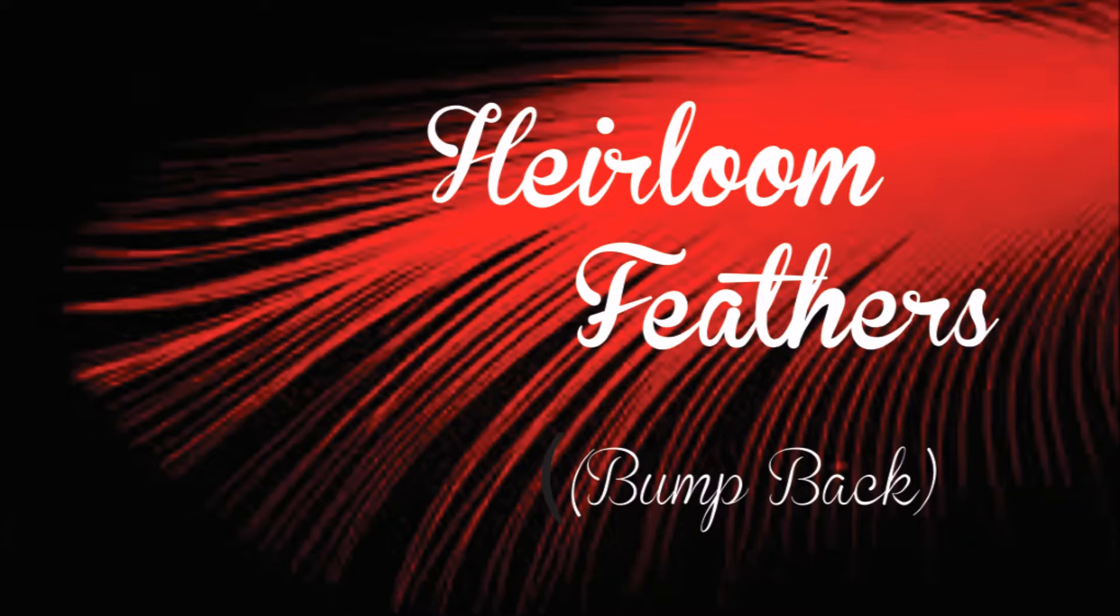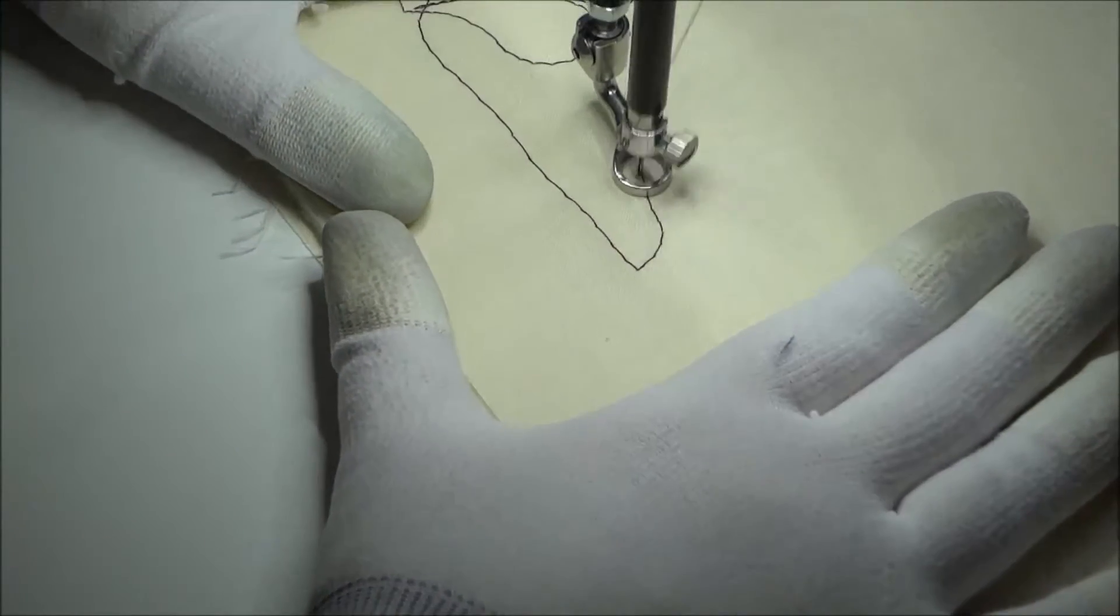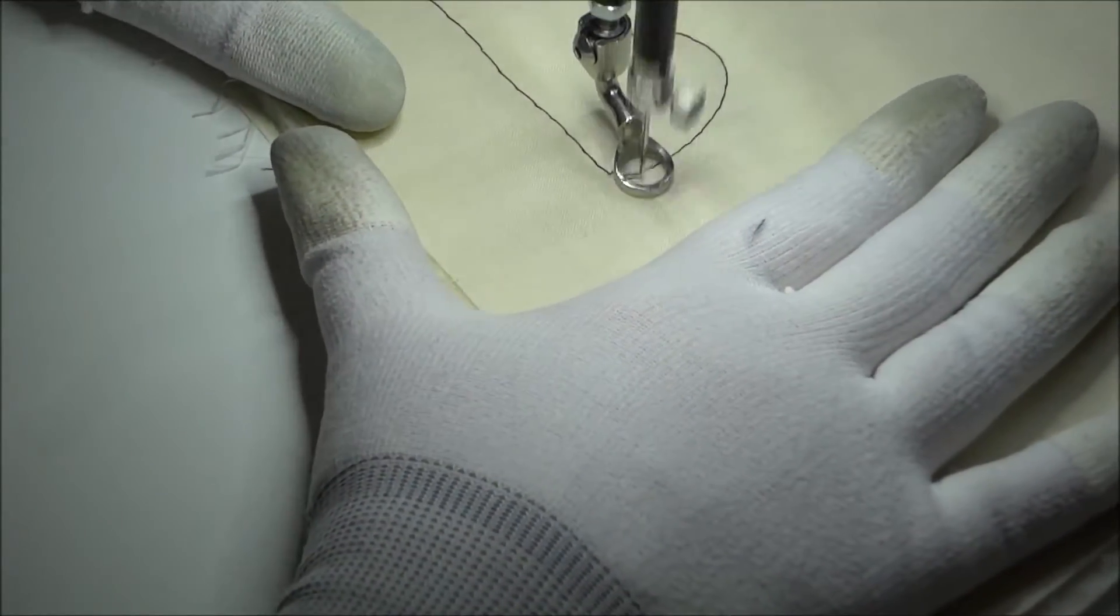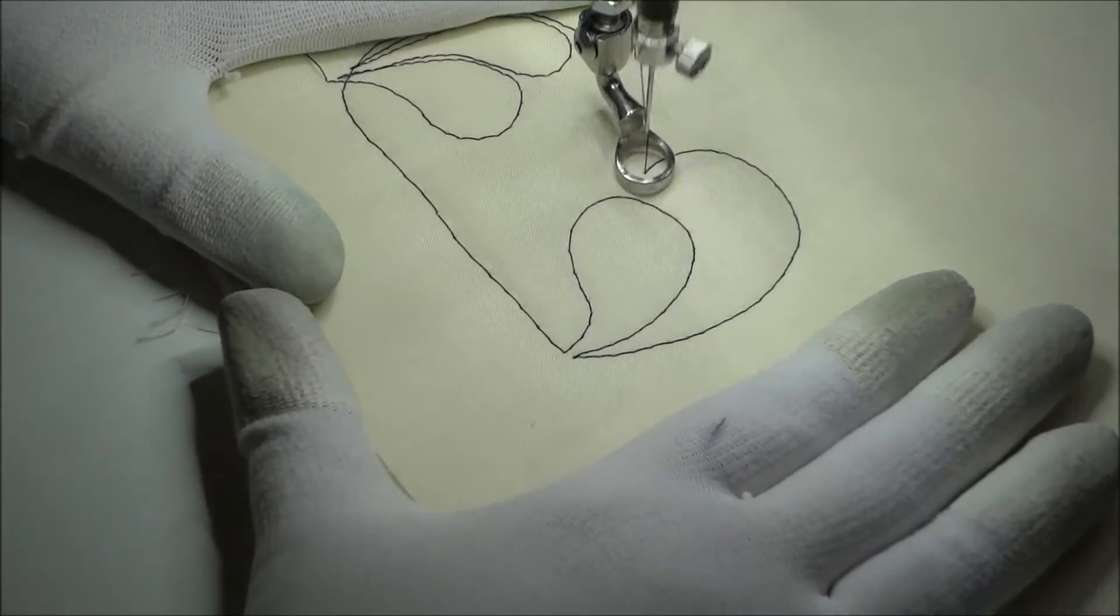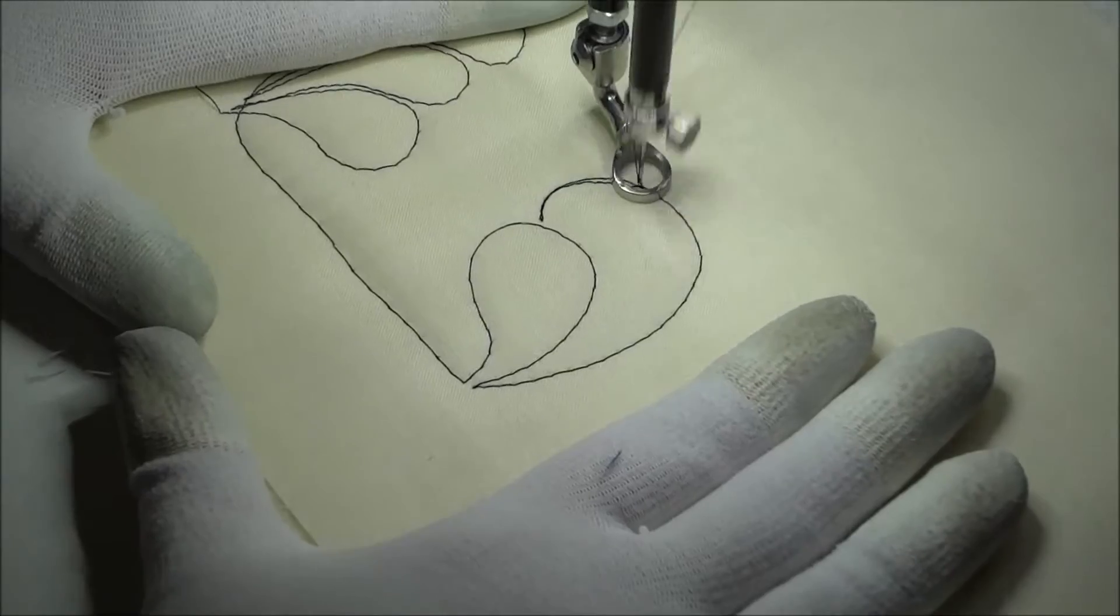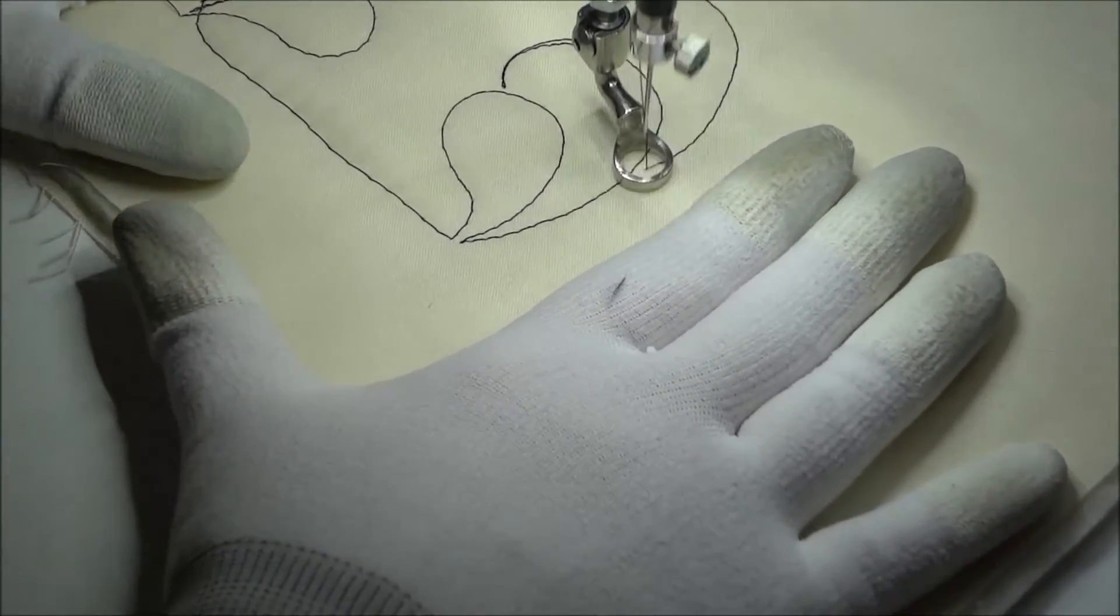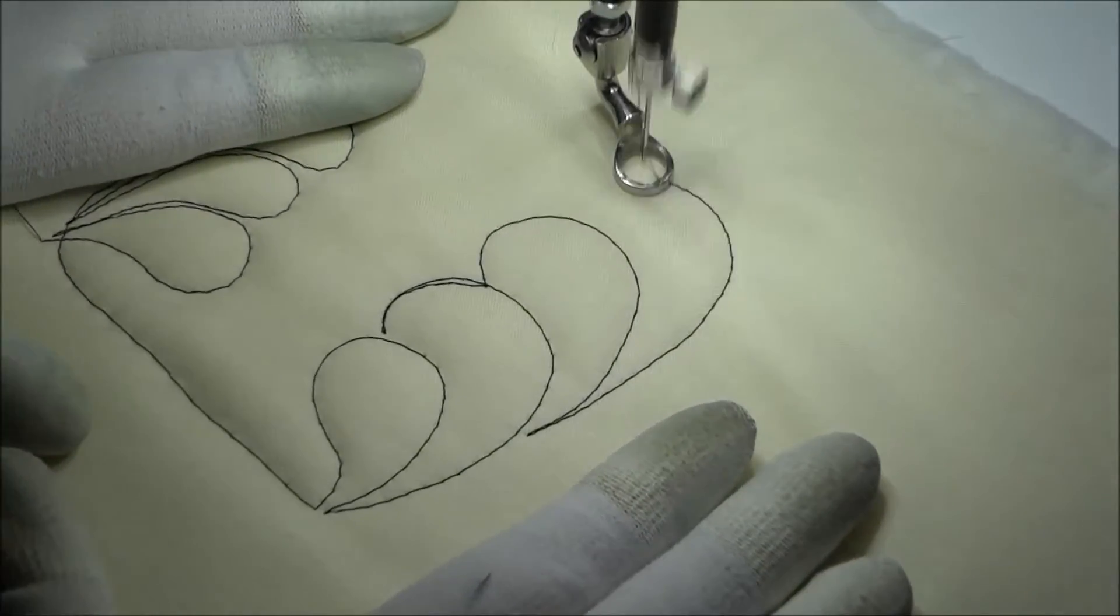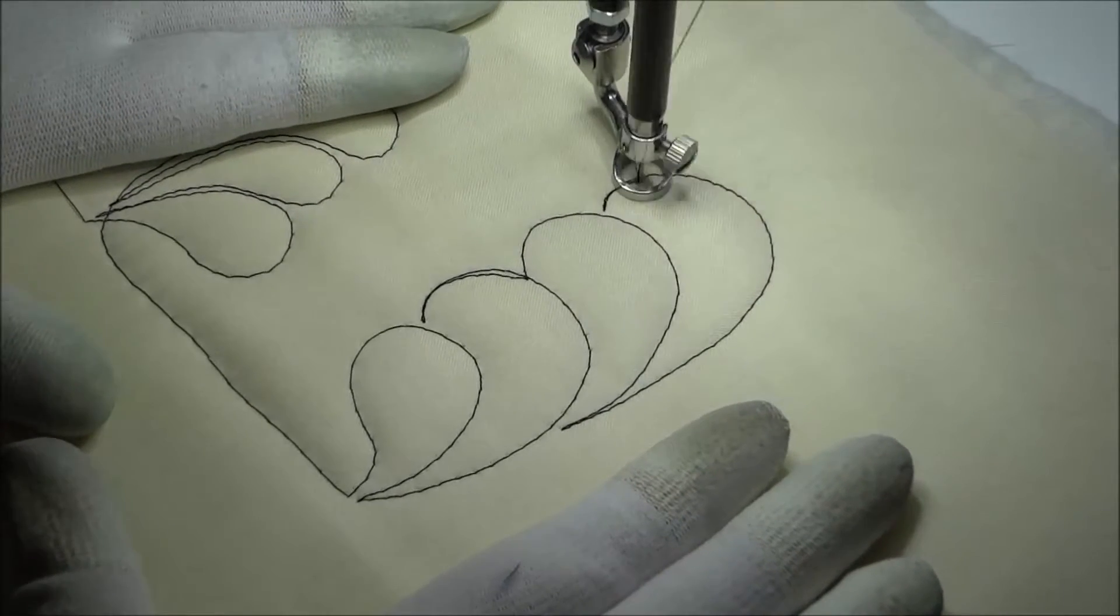The heirloom feather, otherwise known as the bump back, is something I showed you before where you start out with the full feather. From that point on you only do part of the feather. You go around, bump into the feather before, backtrack, and go back to the stem again. You go around, bump into the feather before, backtrack, and around.